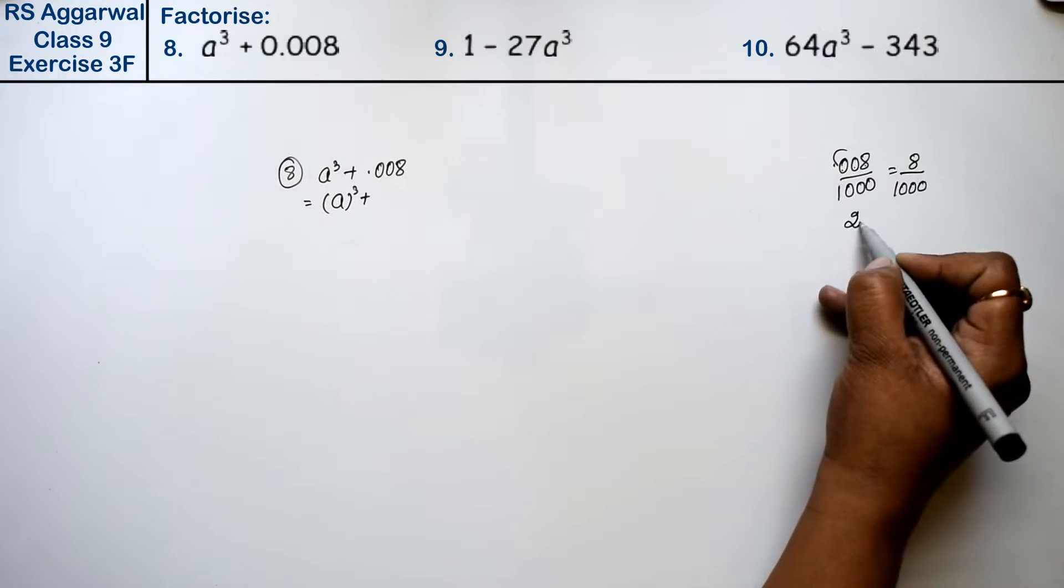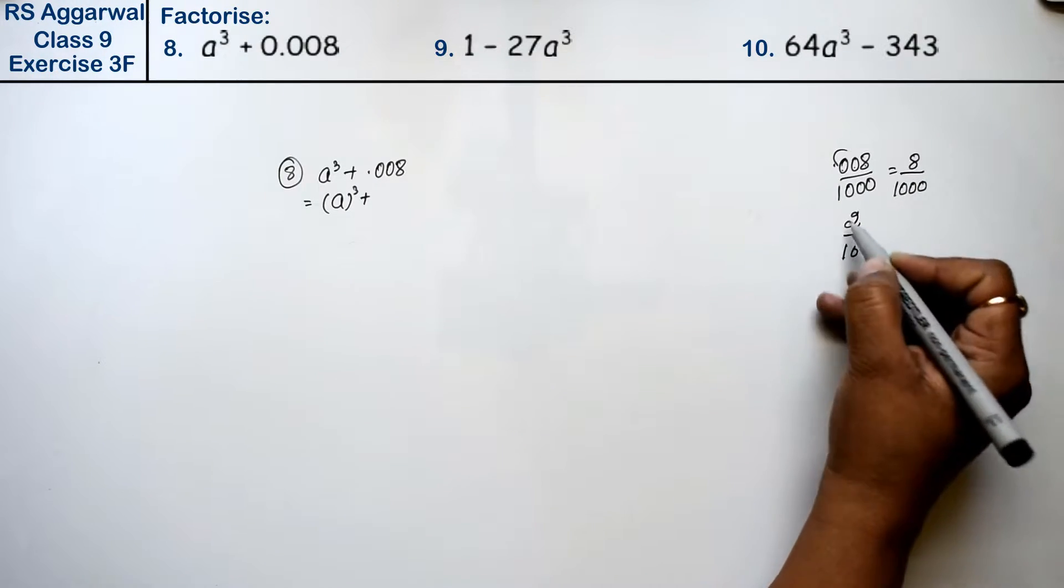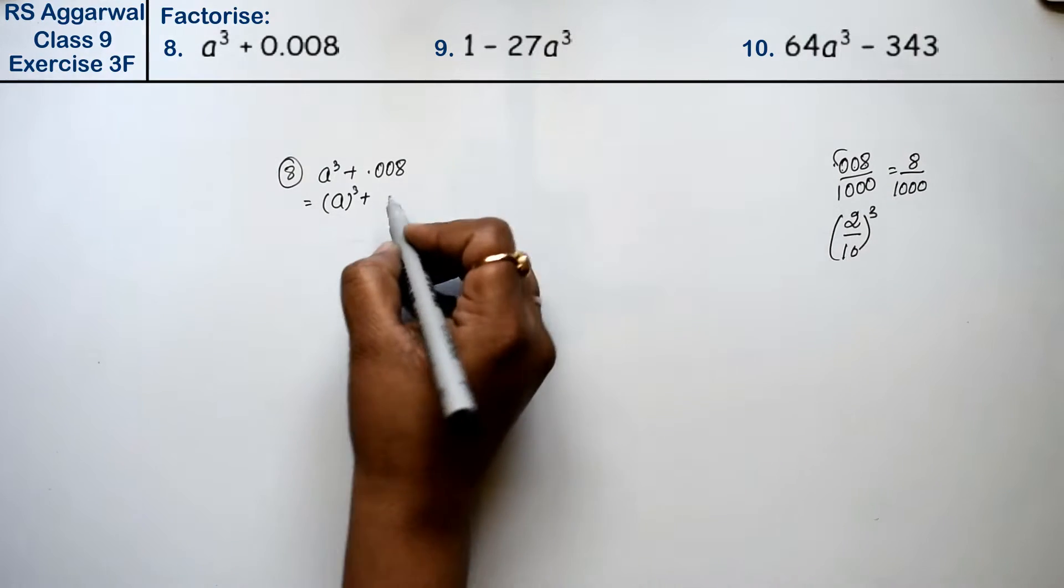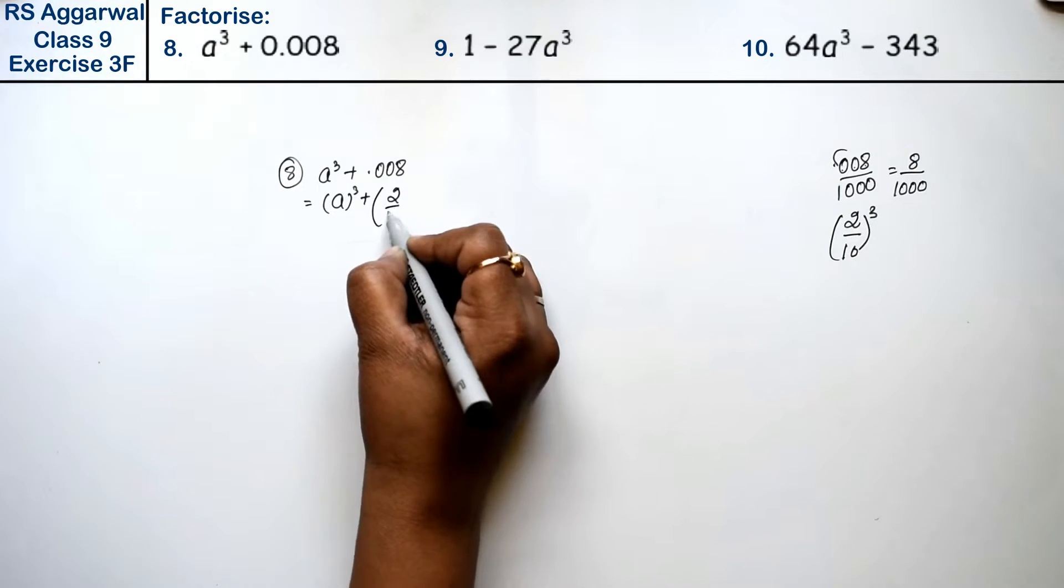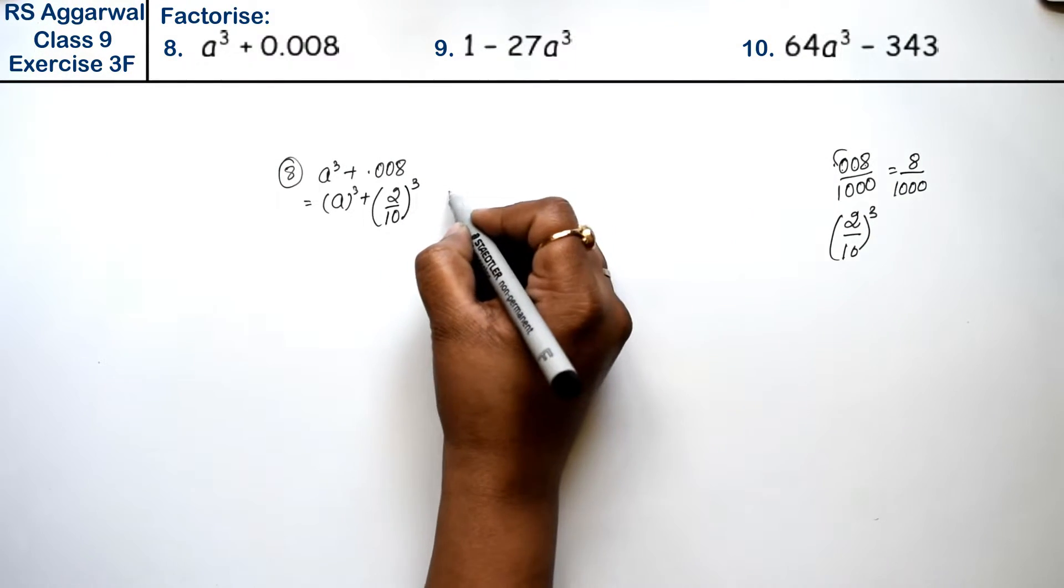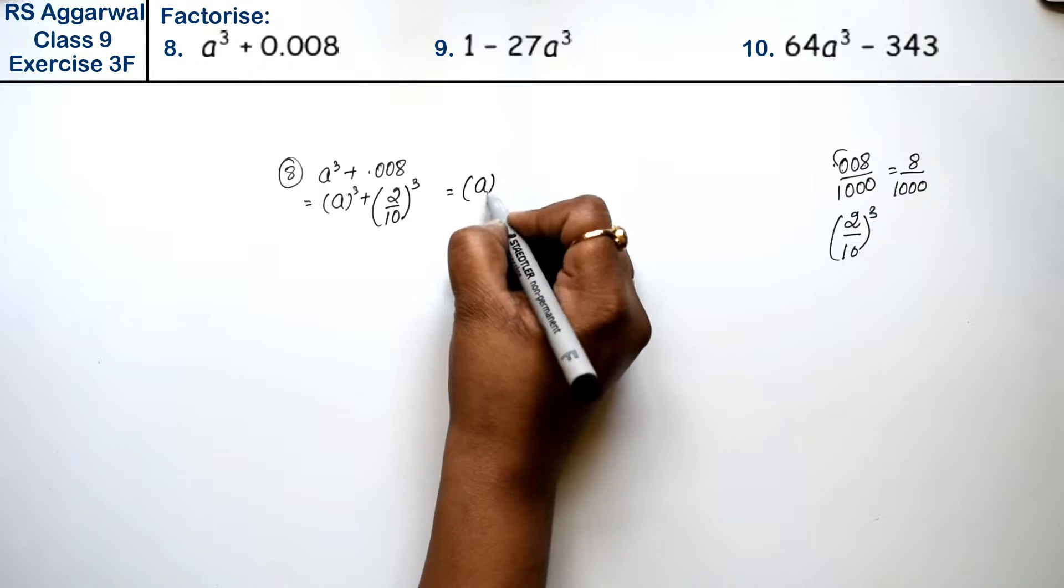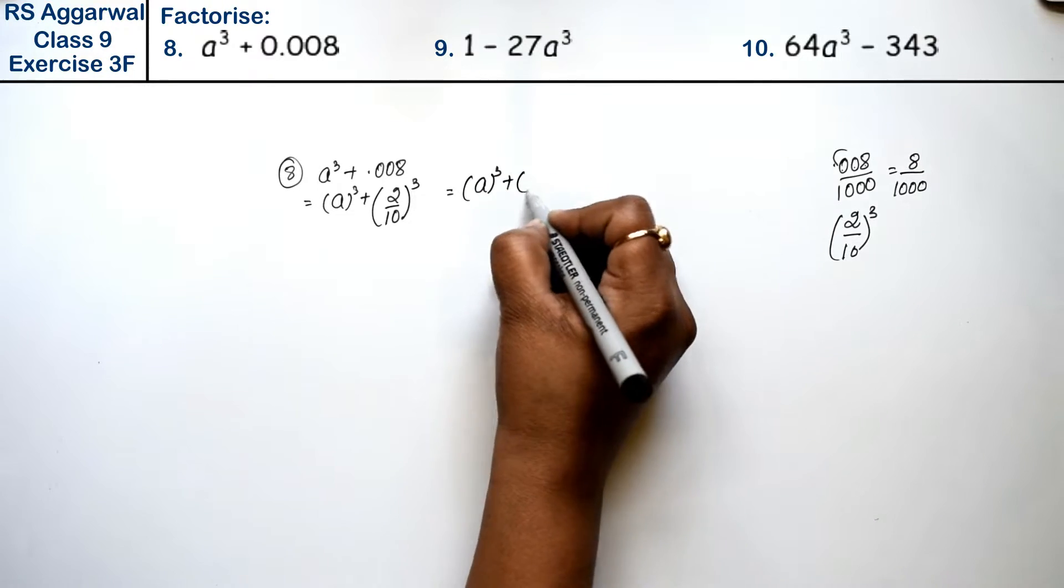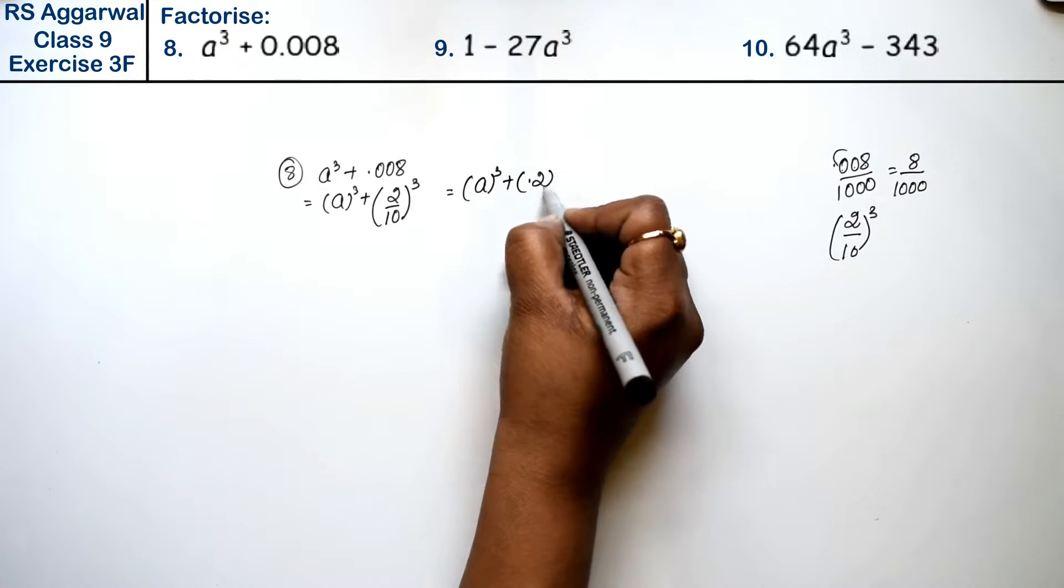Now, 8 is 2³ and 1000 is 10³, so I am directly writing this as (2 upon 10) whole cube. You can write it as a³ plus (0.2)³.